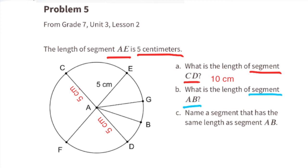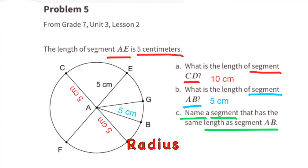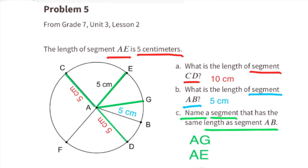Part B: What is the length of segment AB? Again, if AE is 5 centimeters, then AB will also be 5 centimeters. Part C: Name a segment that has the same length as segment AB. That's the radius of this circle, so you could pick any segment that looks like the radius. For example, AG, AE. You could even pick AD, AF, or AC.